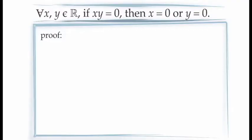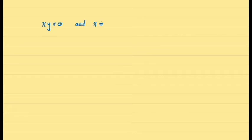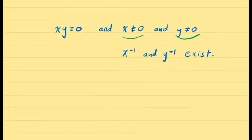Since this is a general statement about all real numbers x and y, we begin by letting x and y be arbitrary real numbers. Using a proof by contradiction, we assume the full conditional statement is false — that is, we assume the antecedent is true and the consequent is false. So our assumption is: assume xy equals 0, but x and y are not 0. From this assumption, we have xy equal to 0 and that x and y individually are not 0, which means x and y are invertible since non-zero real numbers have inverses.